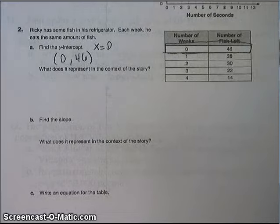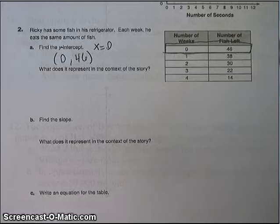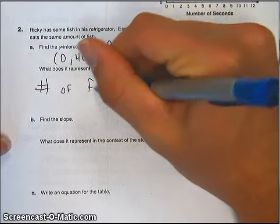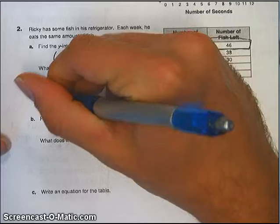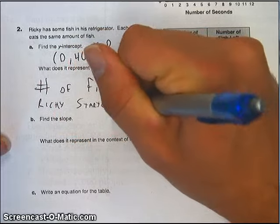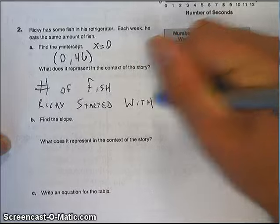Don't just write 46, write 0, 46. What does it represent in the context of the story? Well, that's just the number of fish he started with. Number of fish Ricky started with.